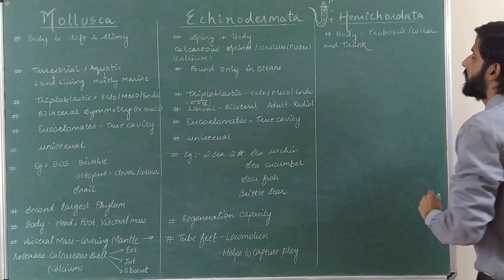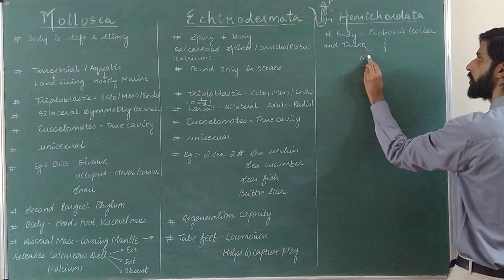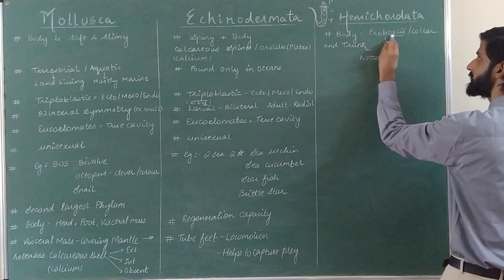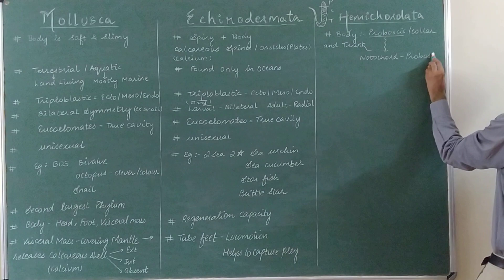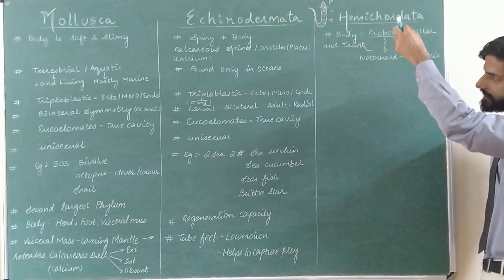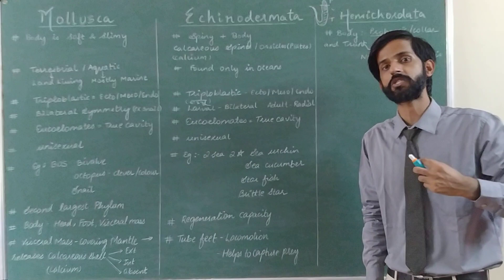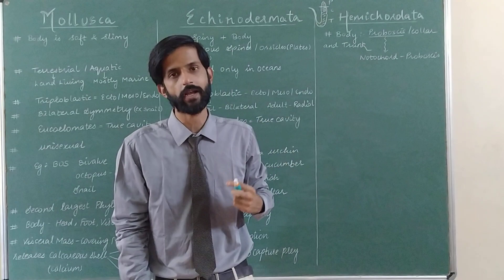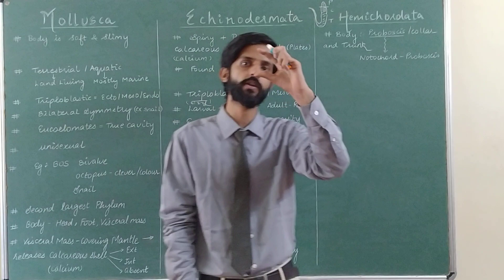Hemichordata shows the presence of a notochord, but only in the proboscis region. So the notochord stays only in the starting part, which is the mouth-like part. Since the notochord is not present along the entire body — only in the proboscis region — these animals are called Hemichordata. Nature began forming the notochord from this category of animals.